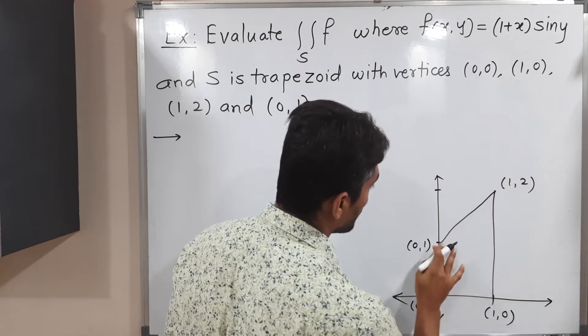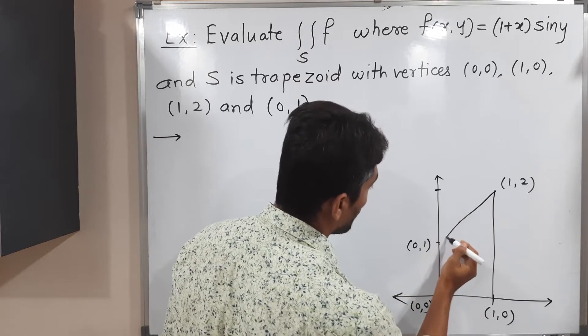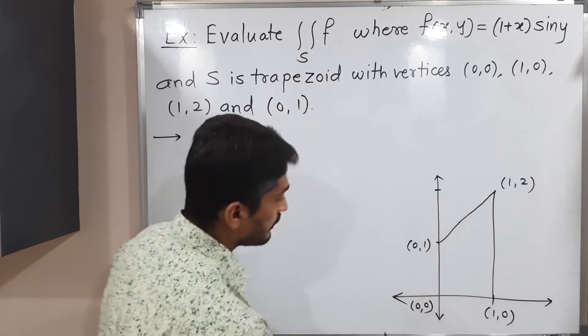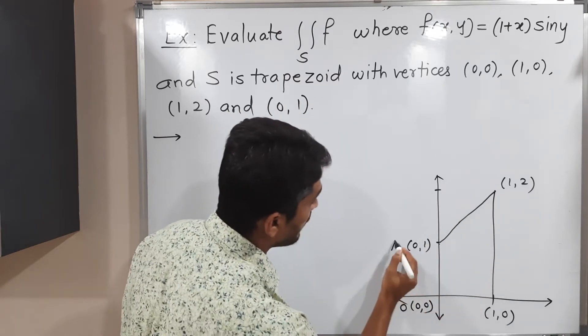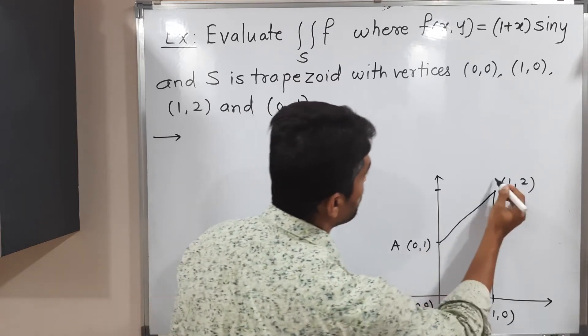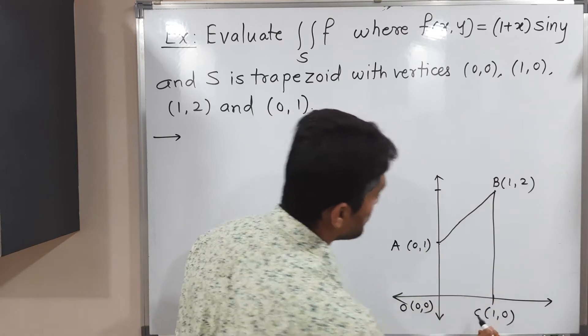This is a rough sketch of the trapezoid. I will label the vertices: this is O, this is A, this is B, and this is C.